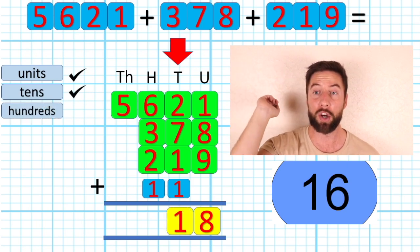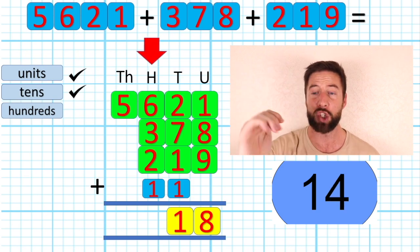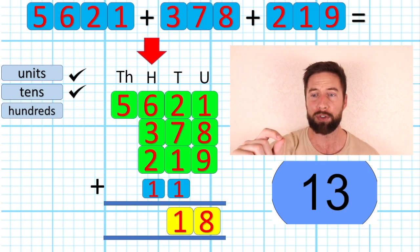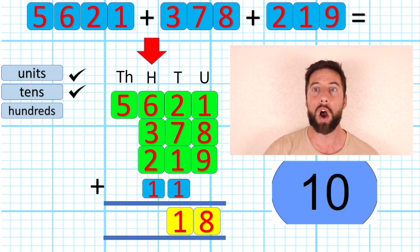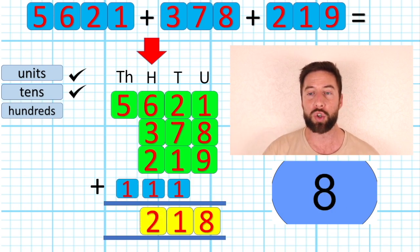Here we go. Now I can do my hundreds. 6, 3, 2 and our 1 that we brought across from our tens question gives me a grand total of 12, 12 hundreds or 1,200.